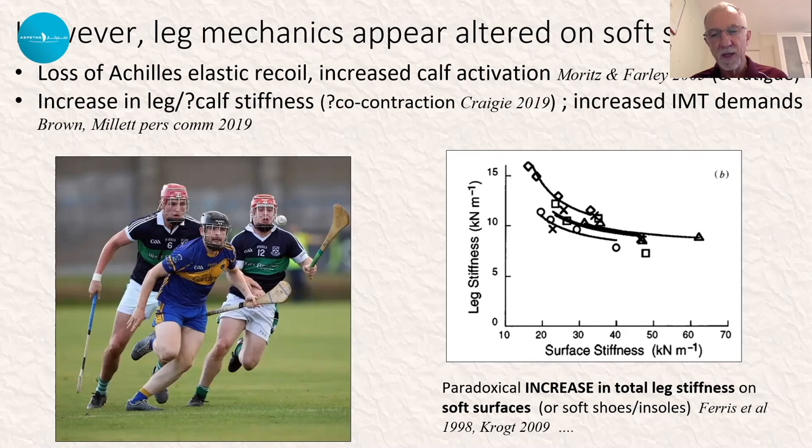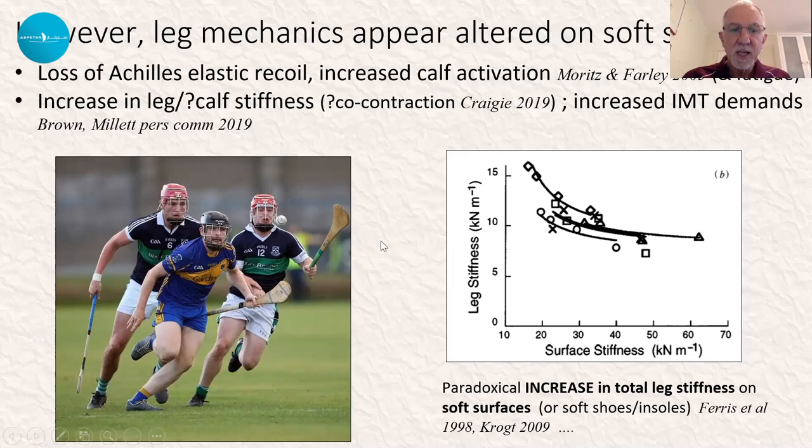As is the work showing that running in softer shoes or with softer insoles actually produces a paradoxical increase in leg stiffness and possibly calf stiffness too. What we don't know is what's happening in this newer generation of energy-returning shoes. It's also thought that there's probably much more co-contraction of the muscles occurring here than in more purely sagittal plane running.